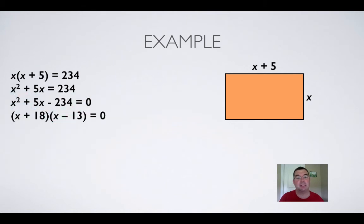And that can be factored into x plus 18 times x minus 13. So now I'm in good shape to use the null factor rule and say that since those two things multiply to give zero, then one of them has to be zero.